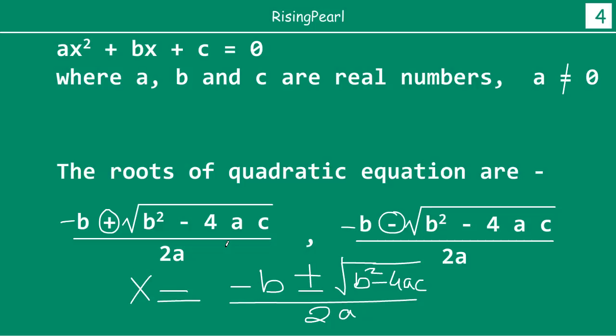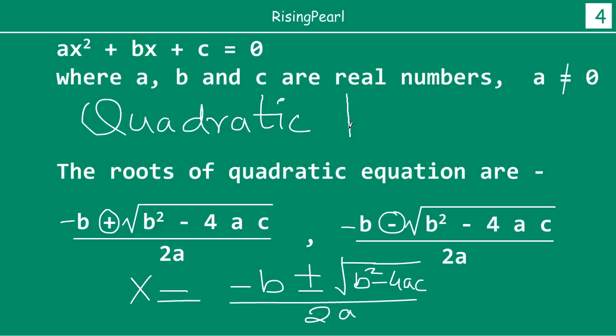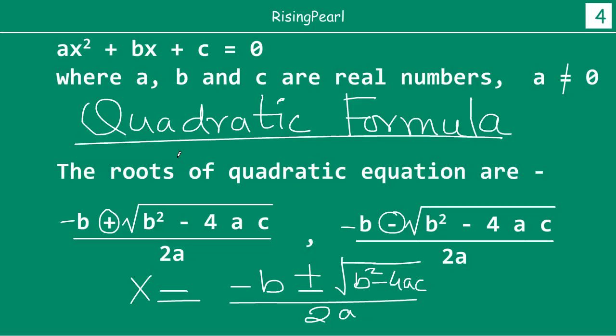So friends, what just happened is we did not use middle term factorization. We used the concept of completing the square. And what we have seen is we can really just by looking at the quadratic equation, we can write the roots. This is also sometimes known as the quadratic formula, where you simply look at the quadratic equation and you can write the roots of the quadratic equation using this formula. This will be only true if B² minus 4AC is greater than or equal to zero.